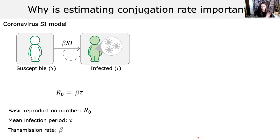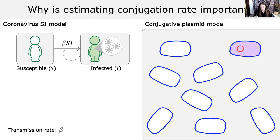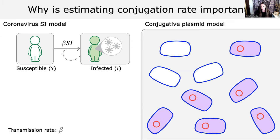We use the law of mass action — we use the density of the two populations, multiply those together with the transmission rate parameter, and that tells us how many infected individuals will be created over time. If you're not familiar with transmission rate, you're probably more familiar with R-naught, the basic reproduction number. Beta is really important for R-naught. Early in the pandemic, forecasting models were sometimes good and sometimes not, and a lot of it has to do with the parameters underlying the models.